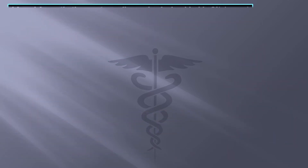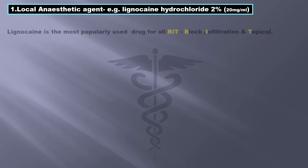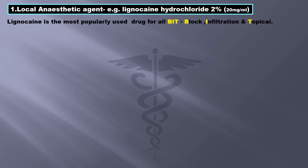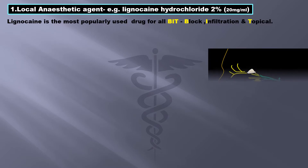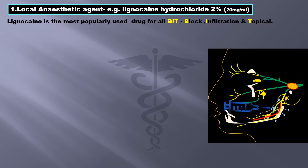Starting with the first main ingredient — the local anesthetic agent. An example is lignocaine hydrochloride, since it is the most popularly used drug for all routes — that is block, infiltration, and topical. It is used in 2% concentration, which is equal to 20 mg per ml.